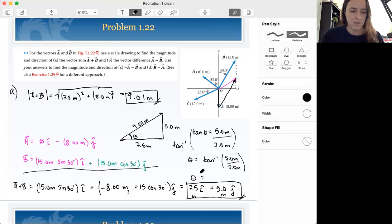Or inverse tan of five over 7.5 that's not five. Gives us 33.69 degrees. And since we've got three sig figs 33.7 degrees.